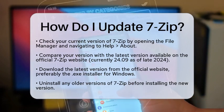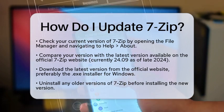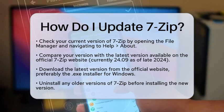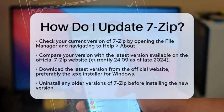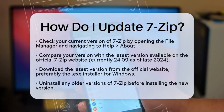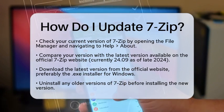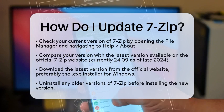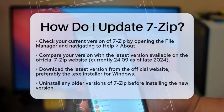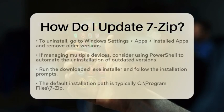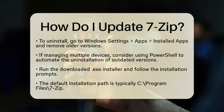Next, you will need to download the latest version. Head over to the official 7-Zip website and look for the executable installer for Windows. It is recommended to use the .exe file instead of the MSI file for a smoother installation process.